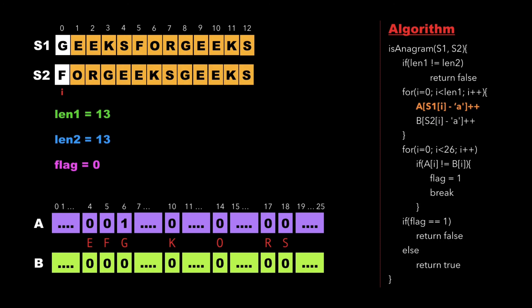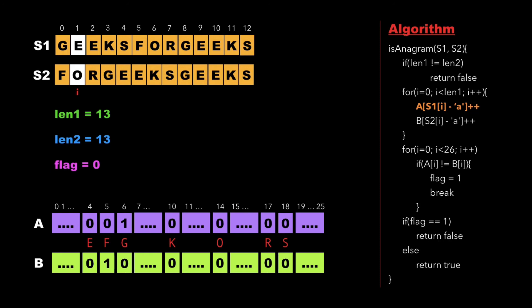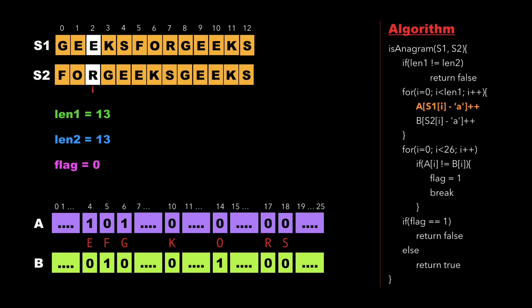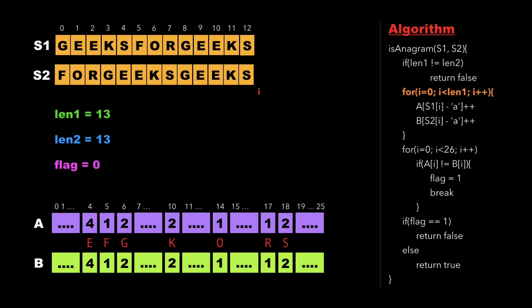Similarly, for character 'f' we update the value in array B to 1. For characters like 'e' and 'o', we update their values in A and B respectively. When a character appears again, its frequency is incremented — for example, 'e' was already 1, so it becomes 2 in array A, and 'r' is updated from 0 to 1. We continue this process for 'k', 'g', and so on until we reach the end of both strings, completing the frequency update.